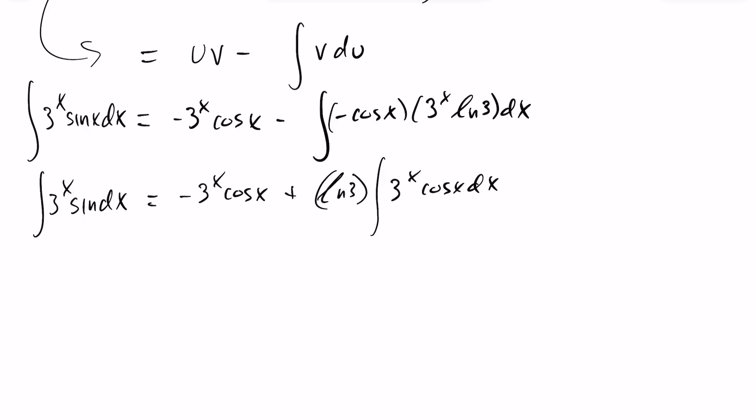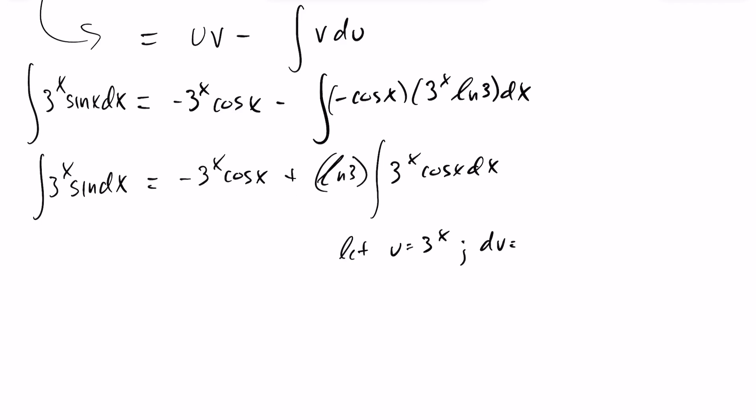So I'm going to try integration by parts a second time here, because that'll switch this back to a sine, and then we can collect these two together and solve. I'm going to let u equal 3^x, and dv equal cos(x) dx, in which case du is 3^x ln(3) dx, once again, and v this time is sin(x).